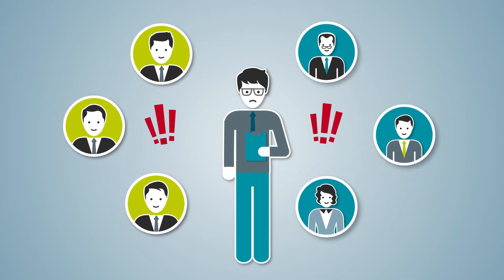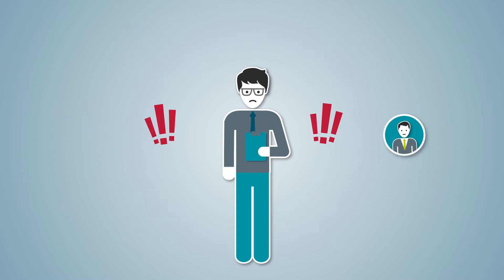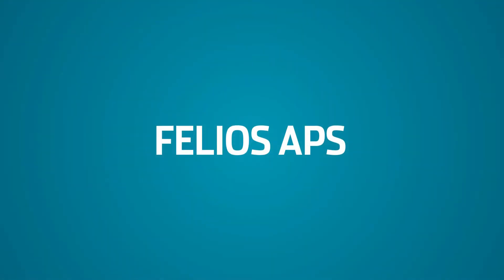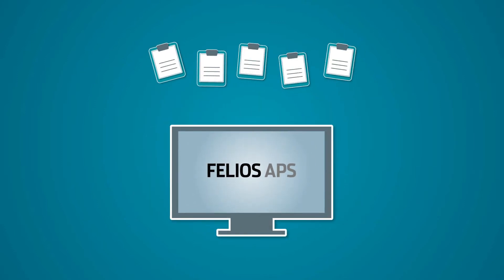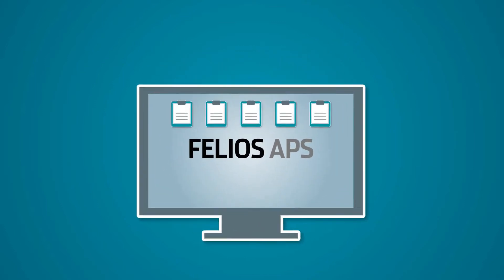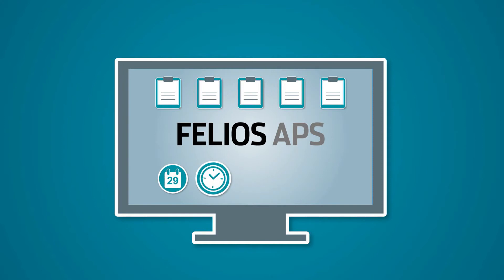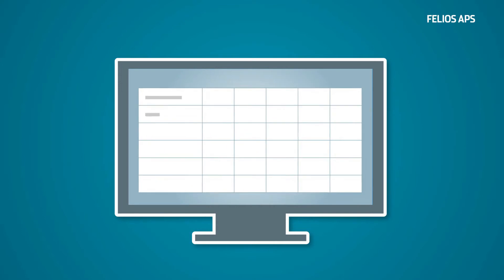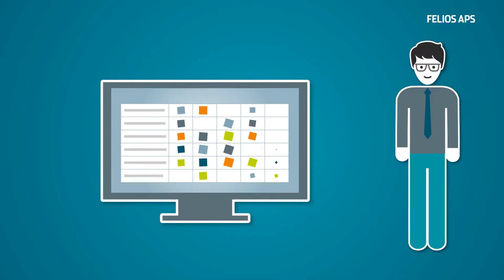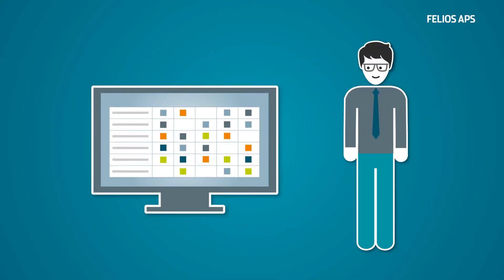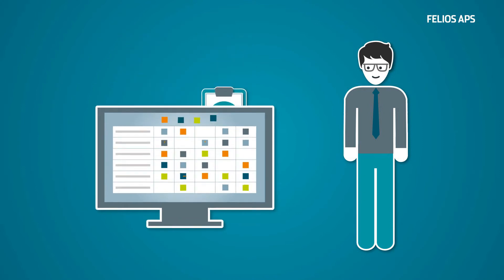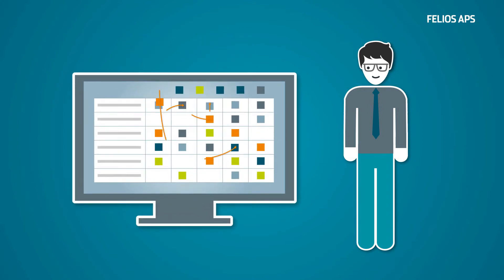We want to show you a solution that helps Mr. Williams to overcome these problems. Philios. Philios organizes your production and gives an overview of the processes. Considering all dates, delivery times, and resources, Philios calculates an ideal production plan. This way, Mr. Williams can always keep his eye on all orders. If short-term orders with high priority come in, he can easily simulate a new plan.